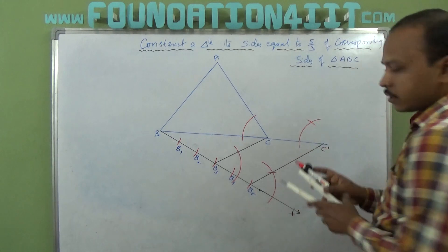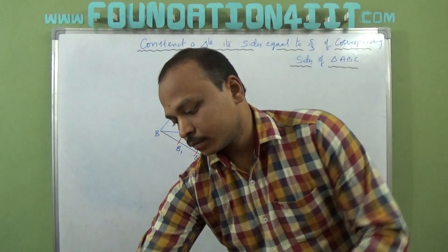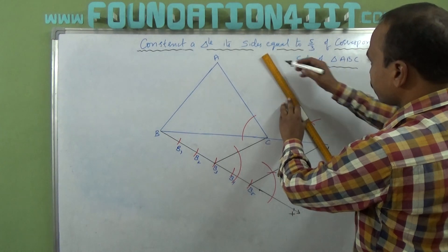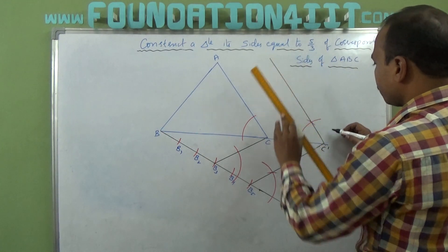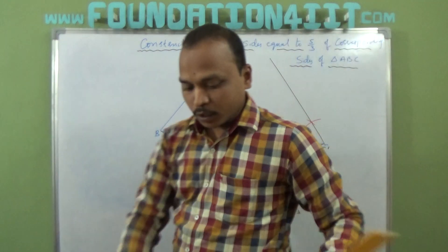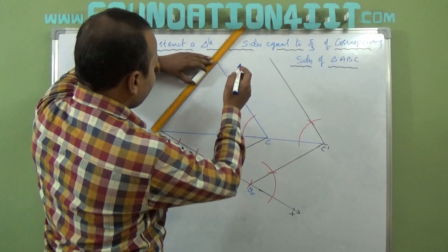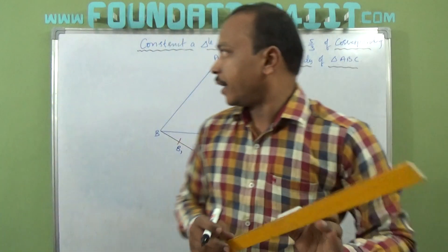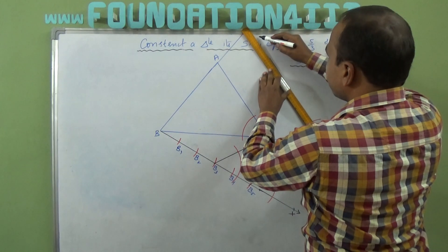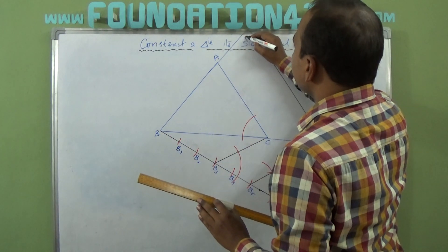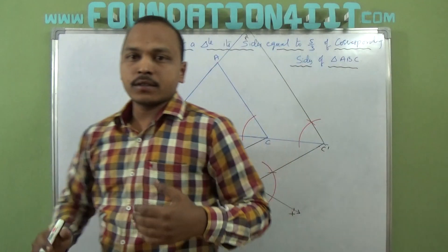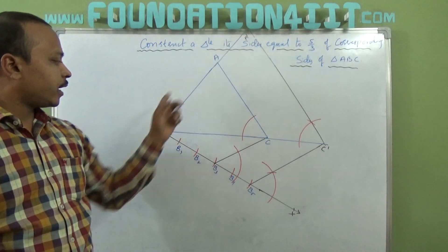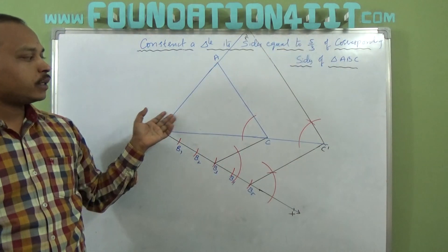Cut the gap arc from C dash as well, then extend the lines. From C dash, draw a line taking the exact parallel to AC. Also extend the side BA beyond A. Extend that line toward the top. Where the two extended lines meet, that point is A dash. So in paper it will come out clearly. The new triangle is A dash B C dash, and it is 5/3 of the corresponding triangle ABC.